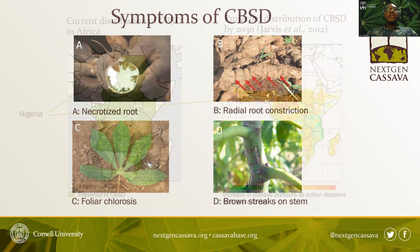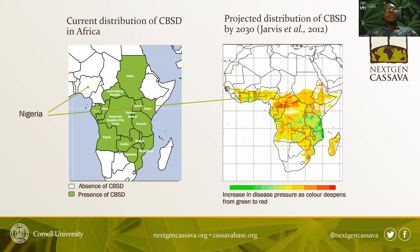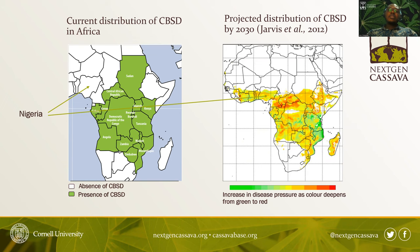The disease is currently distributed across East, South, and Central Africa, and no reported cases have been shown for West Africa, particularly Nigeria, which is the harbor of cassava in Africa. However, projected studies have shown that by the year 2030, this disease will get into West Africa and will spell doom for Nigeria particularly. This necessitated that the National Roots Crops Research Institute Umudike should send some materials to Uganda, which is a hotspot for cassava brown streak disease, for evaluation.